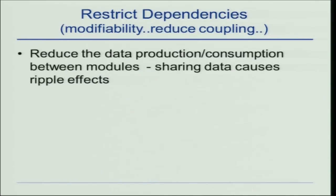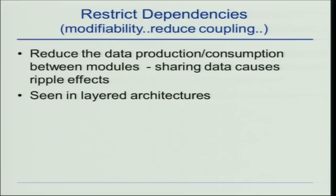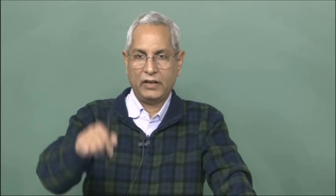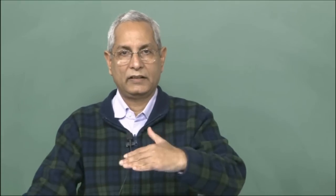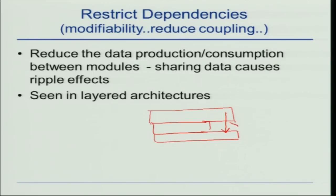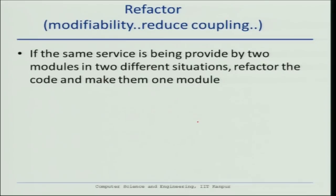The next tactic is restrict dependencies. Very often we see software organized in layers. If you make sure that the sharing of data and services is only with the immediately next layer — no drill-down to layers further below — then you are helping maintenance. For example, the top layer should not access services two layers down; it should only go through the adjacent layer. This also helps modifiability.